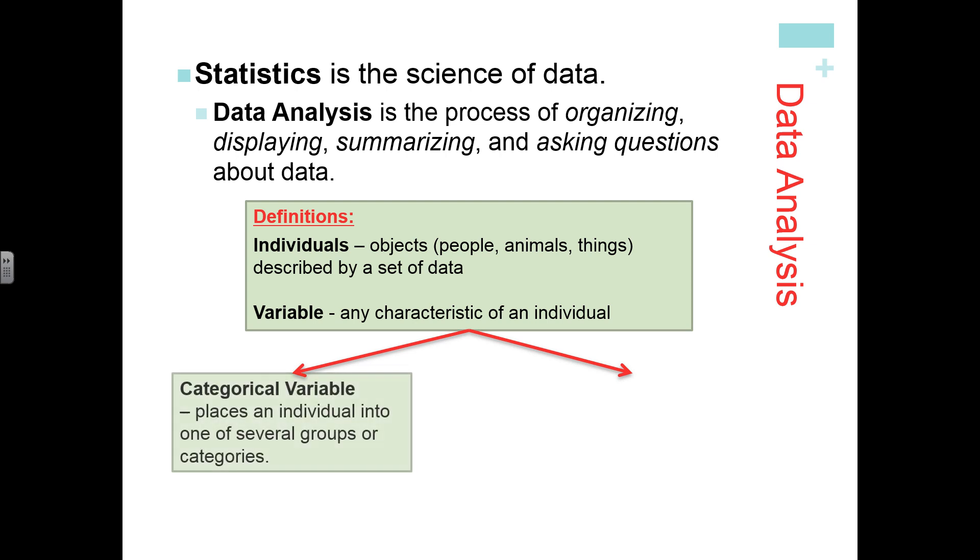There are two types of variables. The first type is a categorical variable, which places an individual into one or several groups or categories. The other is a quantitative variable, which is a variable where it makes sense to find numerical values such as the average.